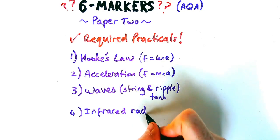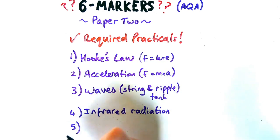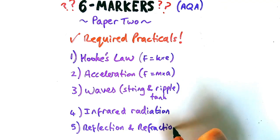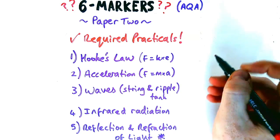The fourth required practical is infrared radiation, that could be absorption or emission. And the last one, which is separate science only, is reflection and refraction of light. So you only need to know that if you're doing separate science.